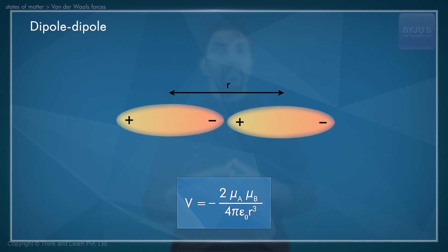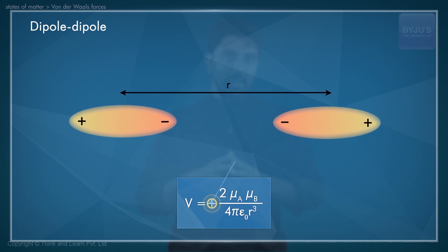If you look at the negative sign, it implies that this interaction is indeed attractive, and should we reverse the direction of one of the dipoles, then the interaction becomes repulsive as indicated by the change in the sign of the proportionality constant.